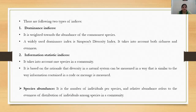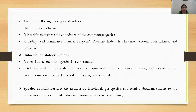Diversity indices are of two types: dominance indices and information statistic indices. Dominance indices are weighted towards the abundance of the commonest species; a widely used example is Simpson's diversity index, which takes into account both species richness and species evenness. Information statistic indices take into account rare species in a community, based on the rationale that diversity in a natural system can be measured similarly to the way information contained in a code or message is measured.